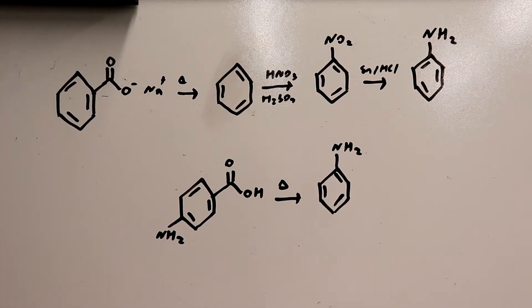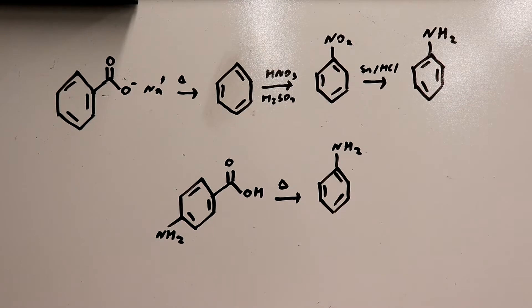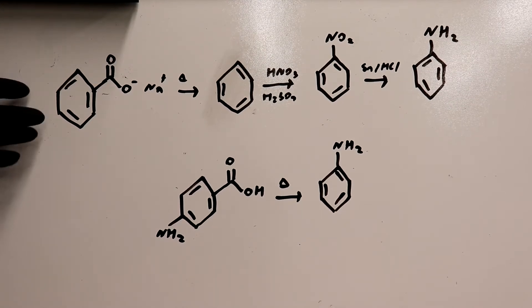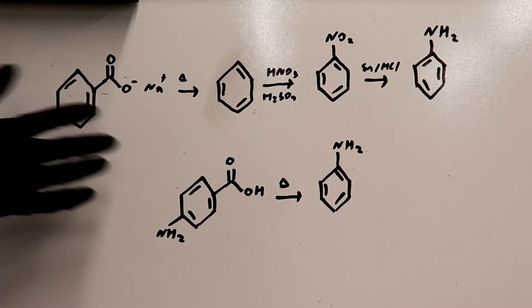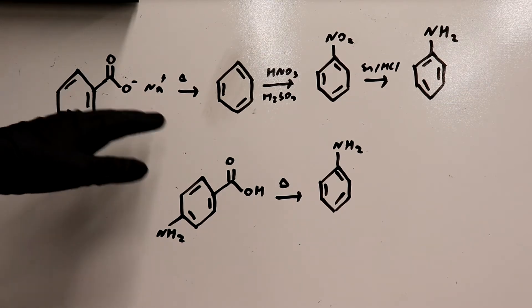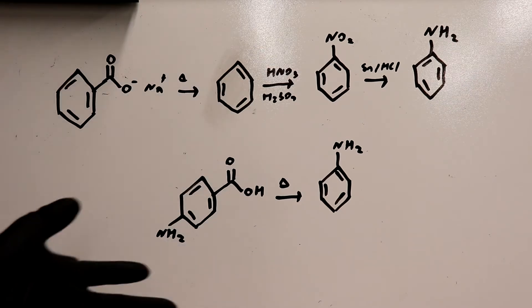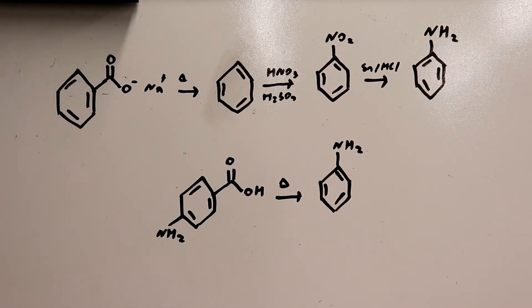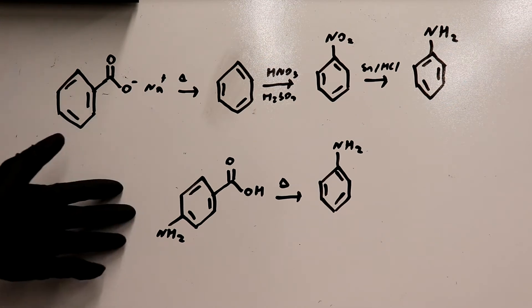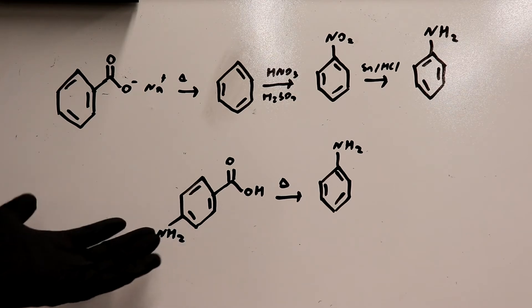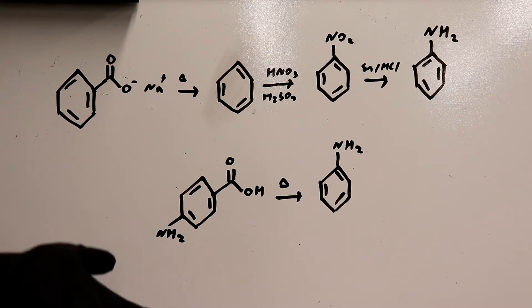Now the usual route for making aniline from commonly available OTC chemicals is starting from sodium benzoate, the food preservative, and then going through benzene via high temperature thermal decarboxylation, then mononitration and finally reduction to aniline. But with this, all you have to do is start from your vitamin, which is also commonly available, and then just do thermal decarboxylation at a relatively low temperature to aniline.